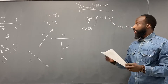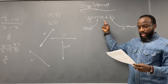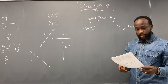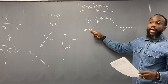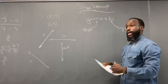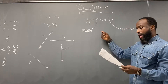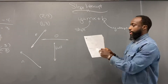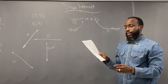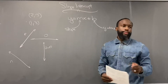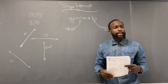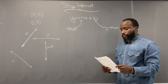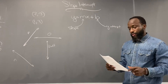The linear equation written in y equals mx plus b form is in slope intercept form. The slope of the line is m, and the y-intercept of the line is b. What does the m represent? Slope. And what's the y-intercept? B. Right — slope intercept form.